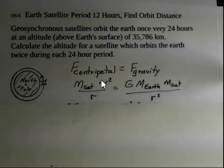So the formula for centripetal force: the mass of the satellite times the speed of the satellite squared divided by the radius of the orbit, and the force of gravity is the universal constant of gravitation times the mass of the Earth times the mass of the satellite divided by r squared.